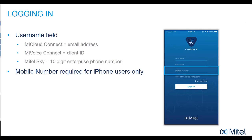iPhone users are required to manually enter their mobile phone number. This enables the mobility router to call you when your Connect for mobile cannot be reached via Wi-Fi or cellular network. The mobile phone number will automatically be retrieved for Android users.